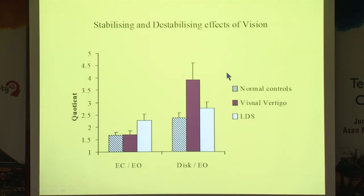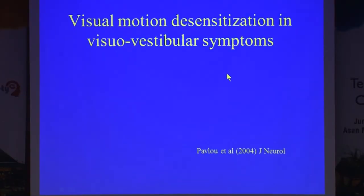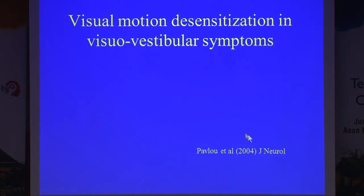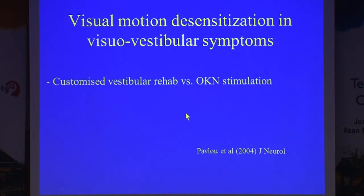Now, if you have a patient who had vestibular neuritis and has developed visual sensitivity — visual vertigo — you have to do something appropriate for that patient. This is what Marusa Pablo did for her PhD with us: a visual motion desensitization treatment in patients with visual vestibular symptoms and difficult-to-rehabilitate dizziness. It was a customized vestibular rehabilitation trial — conventional vestibular rehabilitation versus the addition of optokinetic or visual stimulation.